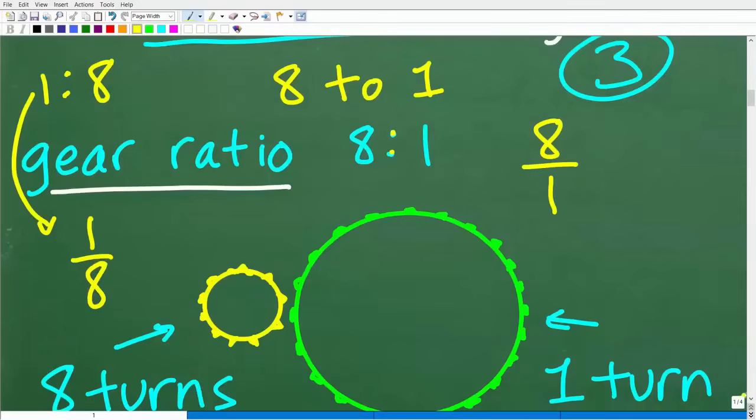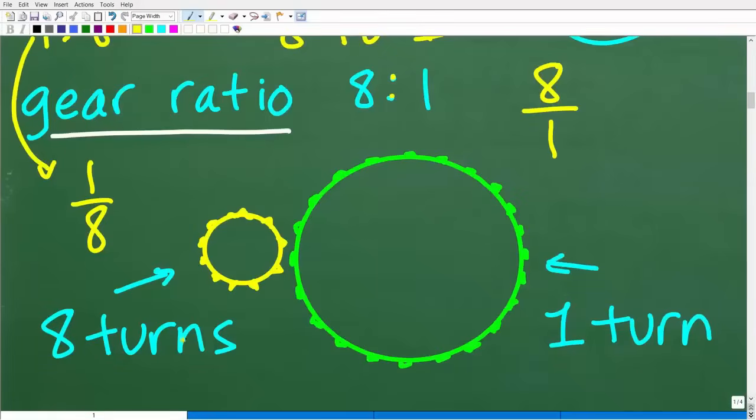So this is what a gear ratio means. And here is effectively our problem. So instead of eight turns, this thing right here is turning 288 times. We want to know how many times did the big gear turn if the small gear turned 288 times. That's the revolutions per minute in one minute.